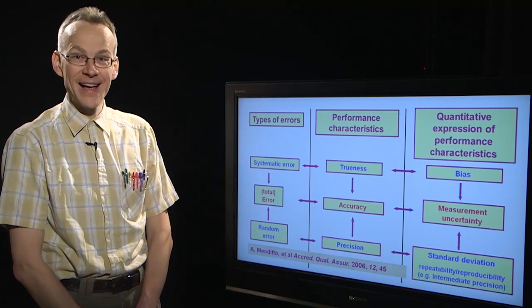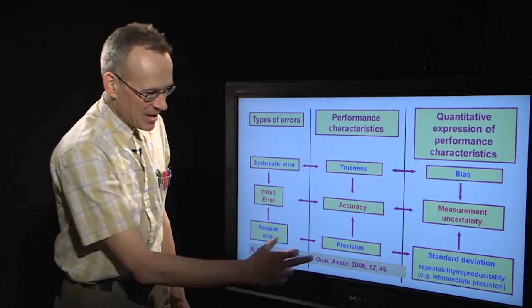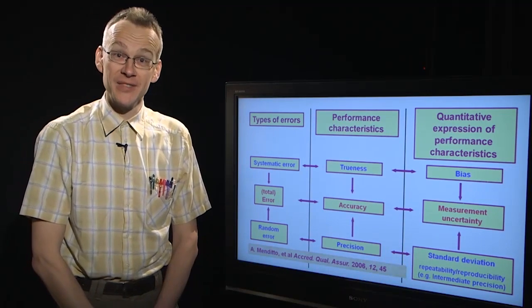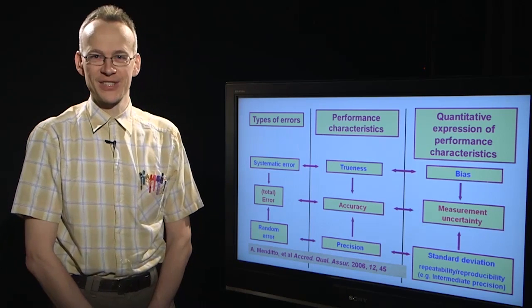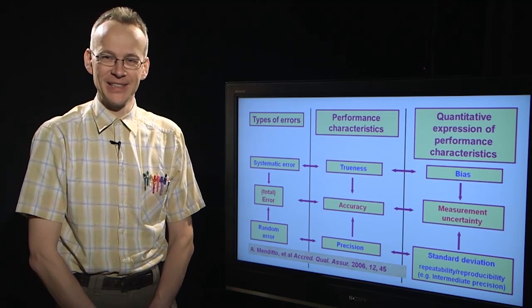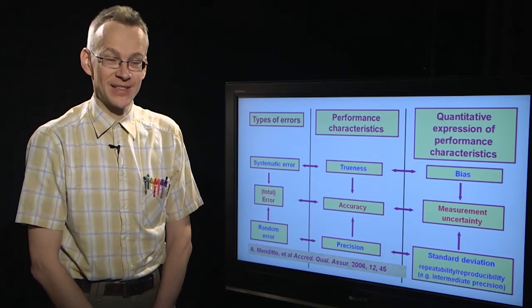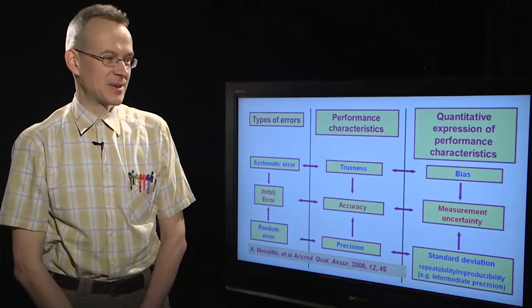Finally, how do we quantitatively express these concepts? Precision is expressed quantitatively by standard deviation. Since there are different types of precision, such as repeatability, intermediate precision, etc., there are also different standard deviations that are used. Trueness is quantitatively expressed by bias.